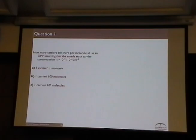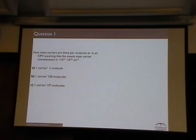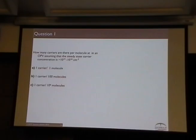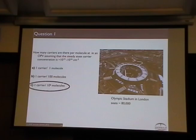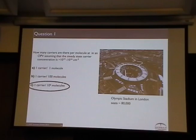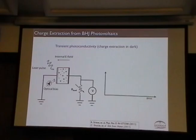Is that a lot? How many charges do we have total in a device — is it one carrier per every molecule, one per 100, or one per about 10^6 molecules? It's more like the latter — it's very dilute. Think of it this way: you're in an Olympic Stadium with 80,000 people. If there's just you, the probability you're going to see another carrier is low if you walk in at random. The carriers are very dilute in solar cells — much more dilute than in transistors. No matter what comes out of the calculation, it's pretty dilute.